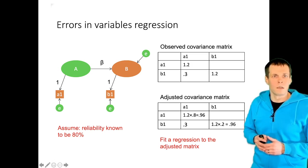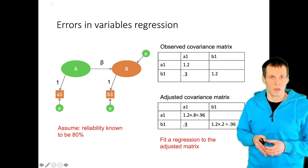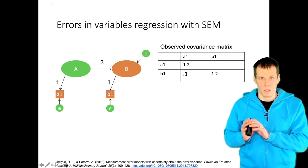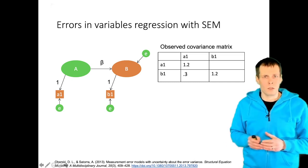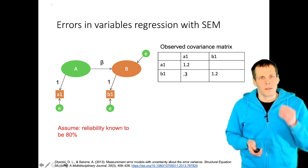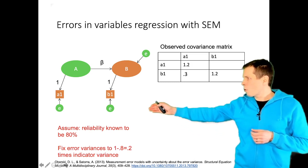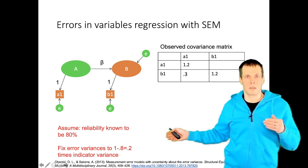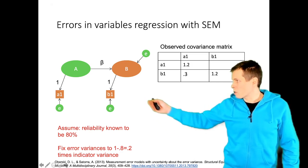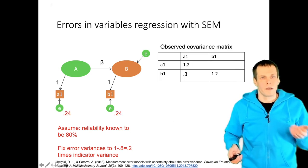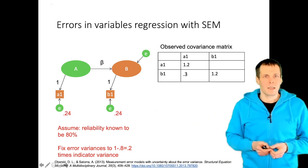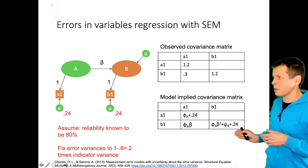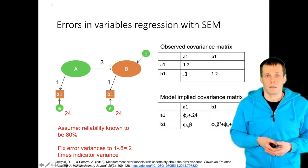This is how the classical errors in variables regression analysis works and it corrects for measurement error. The same can be implemented also in modern structural equation modeling software. And this is perhaps the more common way of implementing this technique today. So we again assume reliability is 80%. Then we fix the error variances of these indicators to be 0.2 times the indicator variance. So if the indicators are 80% reliable, then 20% of their variation is error variance. So the indicator variance is 1.2, the error variances are going to be 0.24 both. We fix them to those values and we estimate the regression coefficient using these fixed error variances and we get consistent estimates.